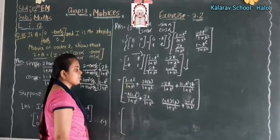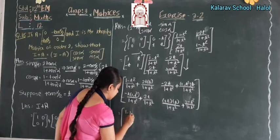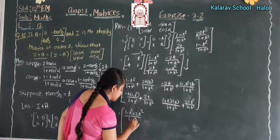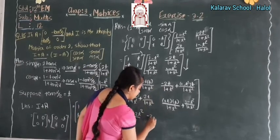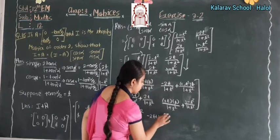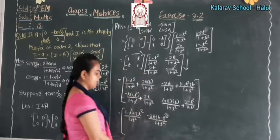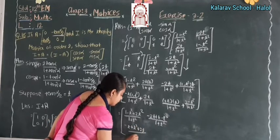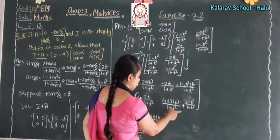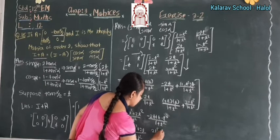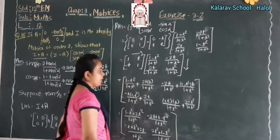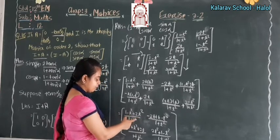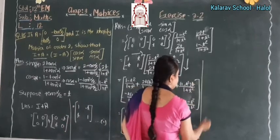Since the denominators are the same, we simplify the numerators. Top-left: (1-t²) + 2t² divided by (1+t²), which gives (1+t²)/(1+t²) = 1. Top-right: -2t + t(-t² + something) upon (1+t²) simplifies. Bottom-left: -t + t³ + 2t upon (1+t²). And the last entry: 2t² + (1-t²) upon (1+t²), which gives (1+t²)/(1+t²) = 1.